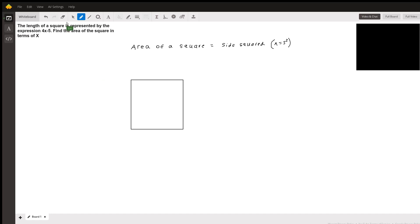So we're given that the length of the square is represented by the expression 4x-5. Let's just put 4x-5. Now remember that a square, the length and width of a square are equal to each other.